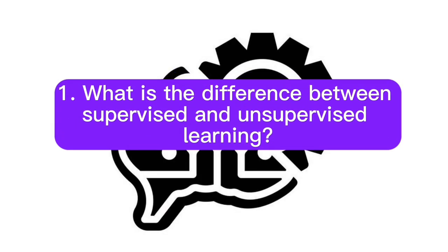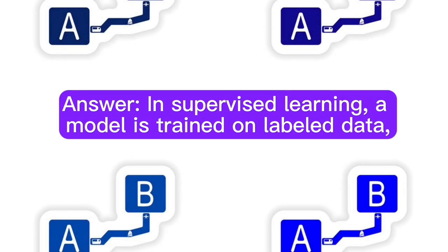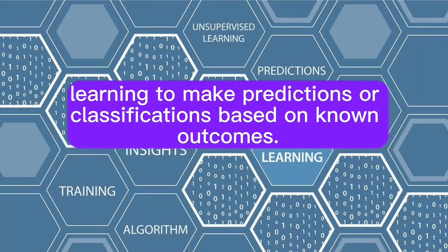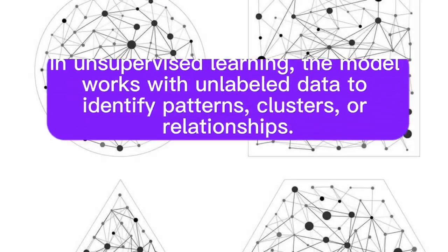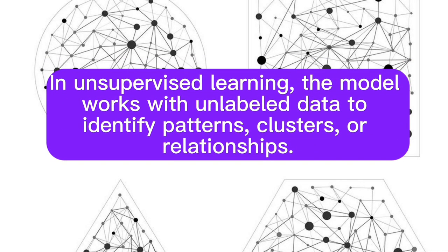Question 1: What is the difference between supervised and unsupervised learning? Answer: In supervised learning, the model is trained on labeled data, learning to make predictions or classifications based on known outcomes. In unsupervised learning, the model works with unlabeled data to identify patterns, clusters, or relationships.